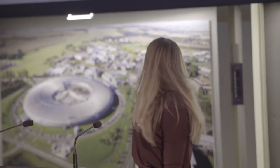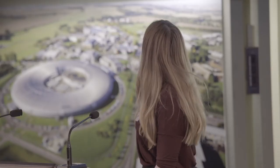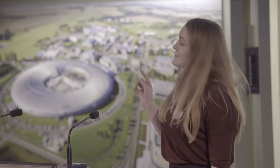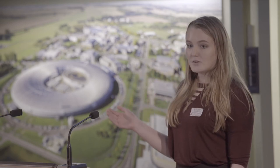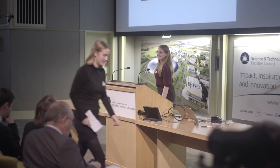As you can see on the diagram, there are two radiation belts around the Earth known as the Van Allen Belts. They are aligned with the magnetic axis, which you can see indicated in purple. The South Atlantic Anomaly is found where the inner radiation belt dips to just 200 kilometres above the Earth's surface.